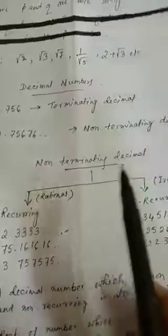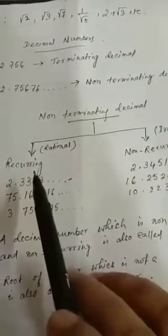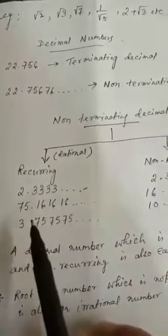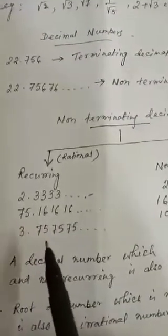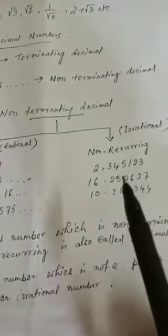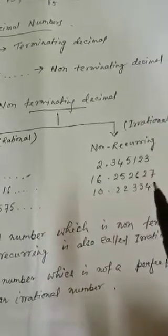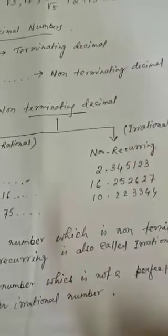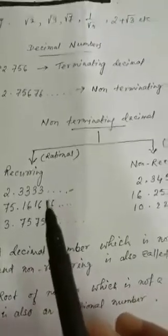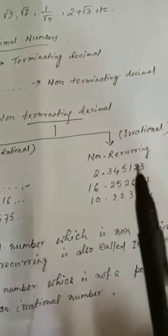Non-terminating decimals are of two types: recurring and non-recurring. Recurring decimals repeat, like 2.3333..., 75.161616..., 3.757575... Non-recurring decimals do not repeat, like 2.345123..., 16.252627..., 10.223344... Non-terminating recurring decimals are rational numbers, but non-terminating non-recurring decimals are irrational numbers.